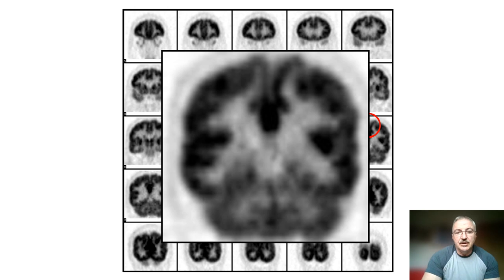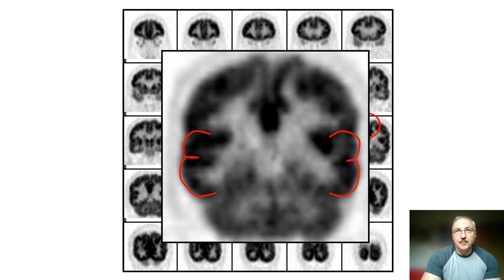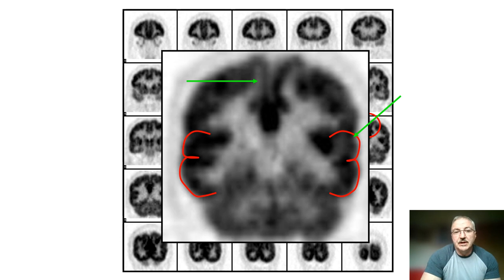Another nice pattern to recognize in the posterior and middle third of the lateral temporal lobe on the coronals is the epsilon-3 pattern — the intensity as it projects over the superior, middle, and inferior temporal lobe gyri. On this case we have reduced activity in the left superior temporal lobe gyrus and comparatively reduced activity within the right precuneus region. This is not a diagnostic pattern, but we would note these things.